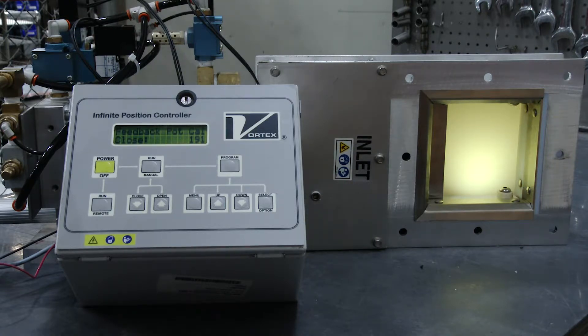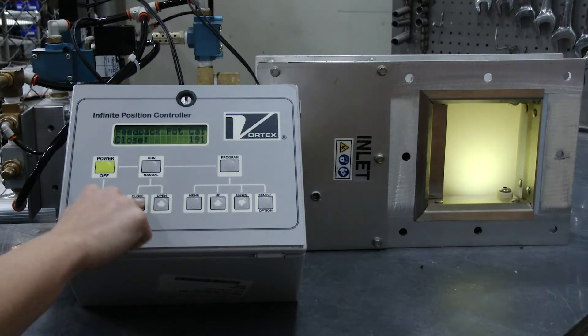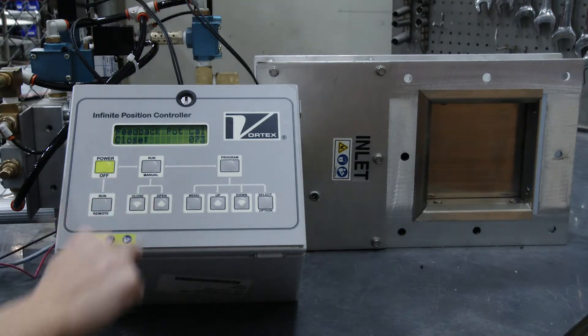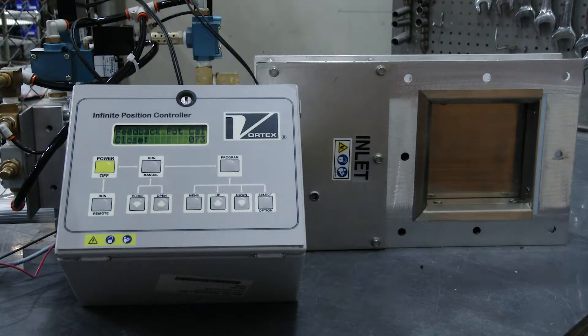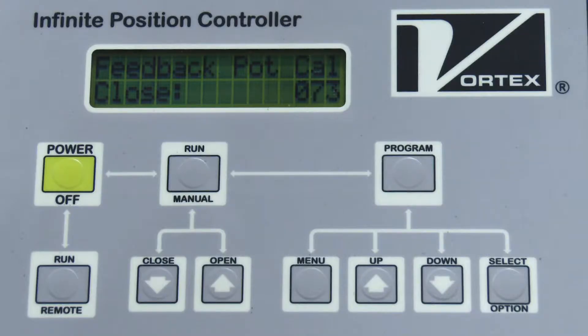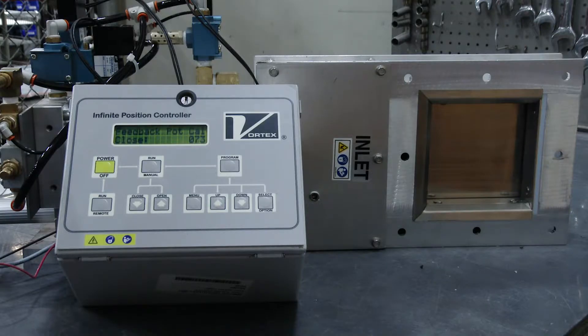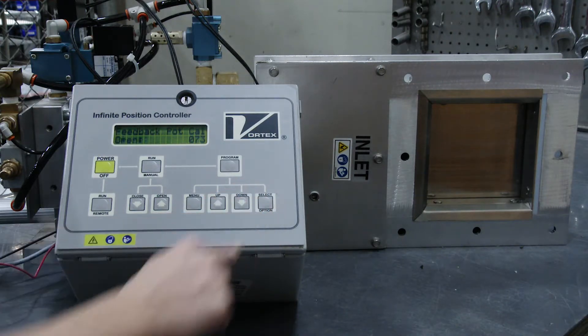As prompted by the IVP, we will calibrate the closed position first. Press the Close button under the Run Manual button, even if the valve is already in the closed position. Notice the number in the lower right portion of the display. This number is representative of the valve gate position on a scale of 0 to 255. Once the valve is in the fully closed position, press the Select Option button.